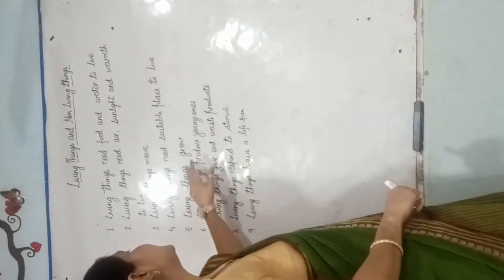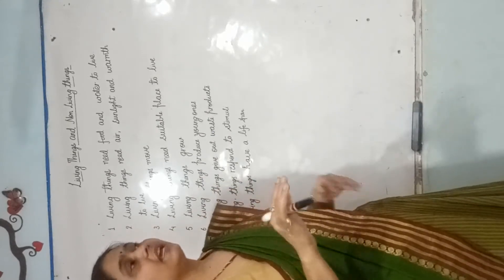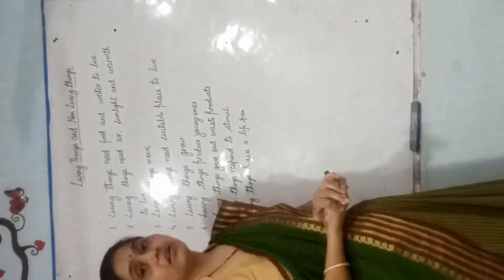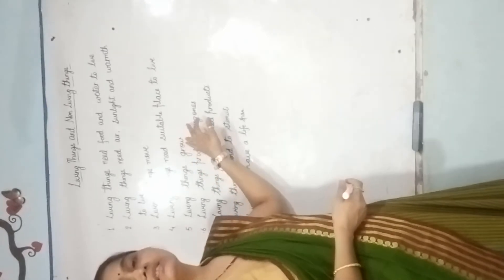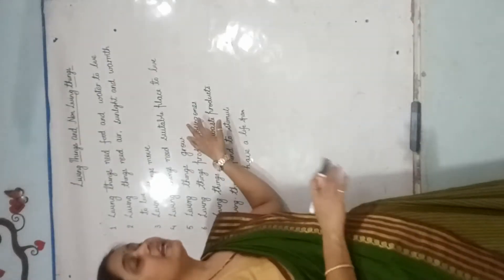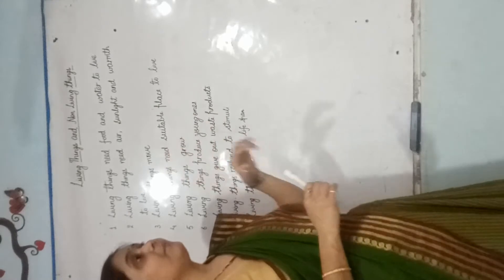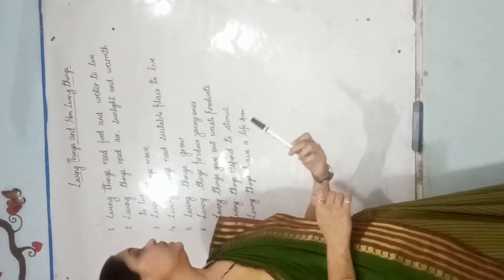Now, living things need to grow. Living things जो होती है, वो grow करती है, while non-living things grow नहीं करती. आप देखते हो ना, बच्चा कितना छोटा होता है, छोटे से बड़ा होता है, बड़ा होके फिर अपने parents जितना बड़ा हो जाता है. तो up to a limit, the living things grow. While non-living things, they do not grow — आज हम pencil लेकर आए, कल वो बड़ी नहीं होगी, वो उतनी की उतनी ही रहेगी.